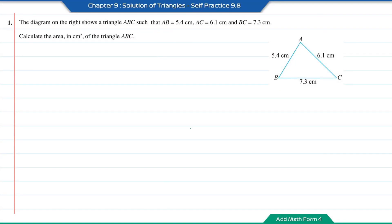Practice 9.8, question number 1. The diagram on the right shows a triangle ABC such that AB equals 5.4 cm, AC equals 6.1 cm, and BC equals 7.3 cm. Calculate the area in cm² of the triangle ABC.